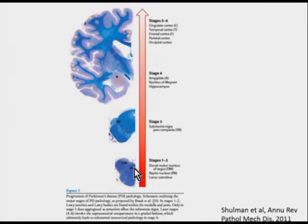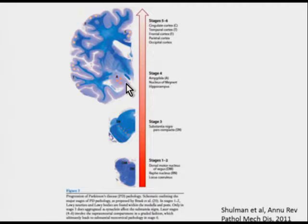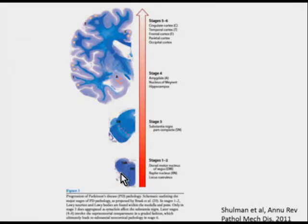Braak proposed that the earliest changes in Parkinson's disease appear in the dorsal motor nucleus of the vagus, the raphae nucleus, and the locus coeruleus of the pons. Over time, aggregation of Lewy bodies appears in the substantia nigra (stage three), then in the amygdala, nucleus basalis of Meynert, and hippocampus (stage four), with the latest stages showing aggregation in cortical neurons. The question is whether these stages represent increasing severity or actual propagation of protein through these anatomic sites via neuronal connections.